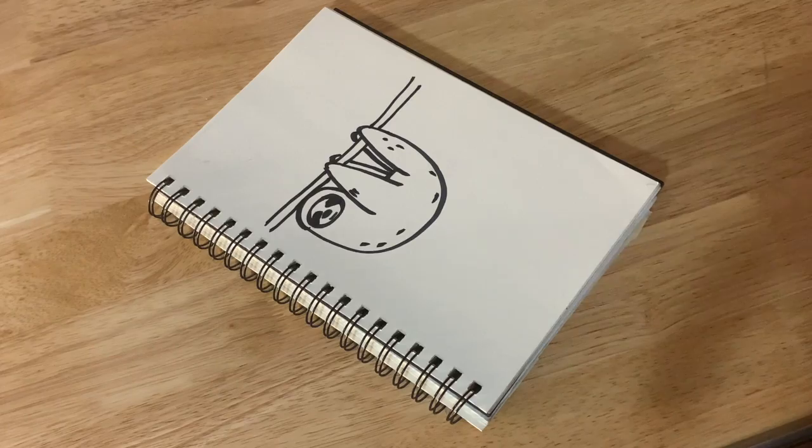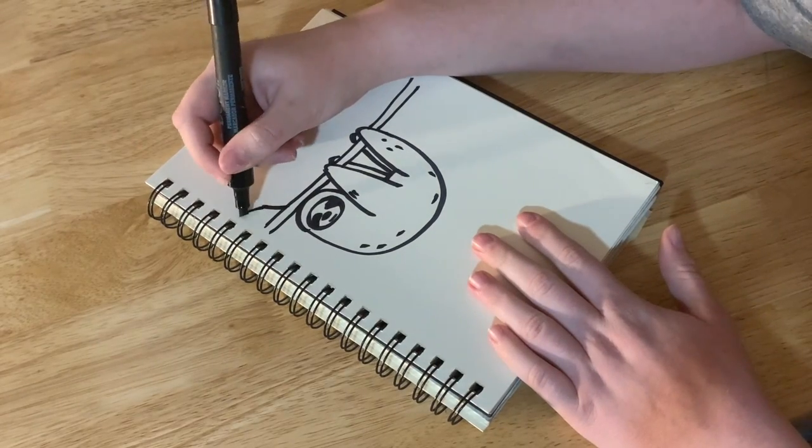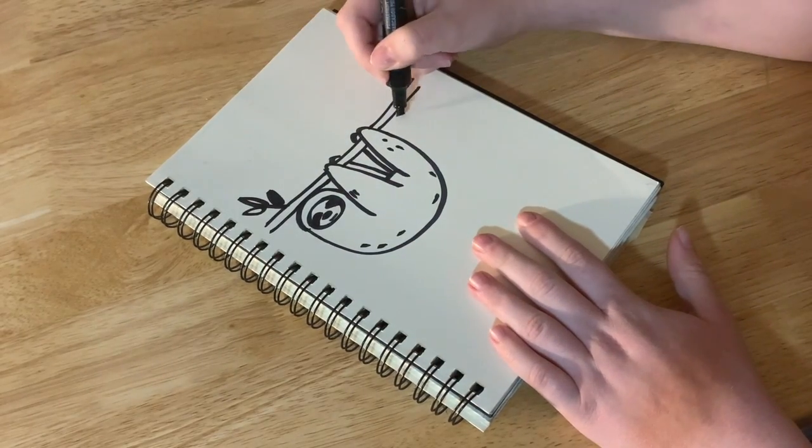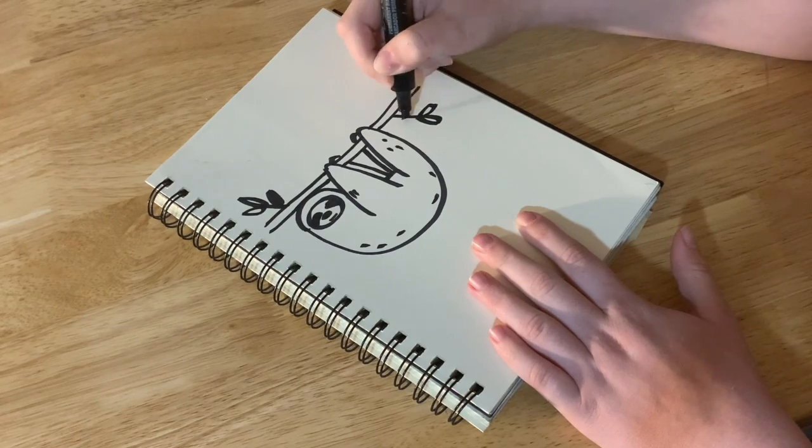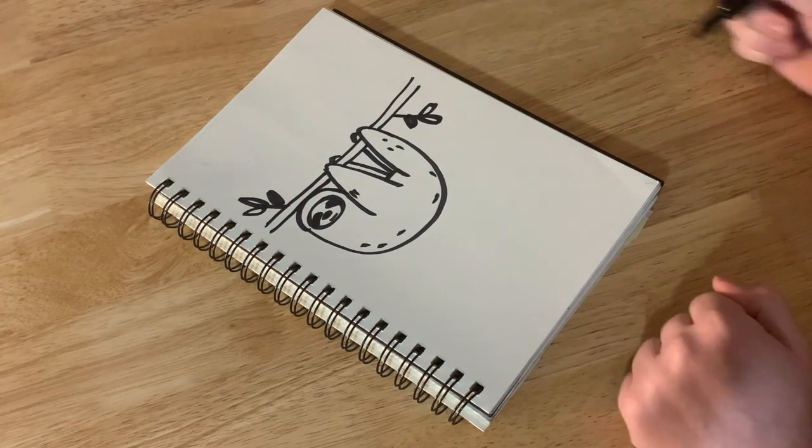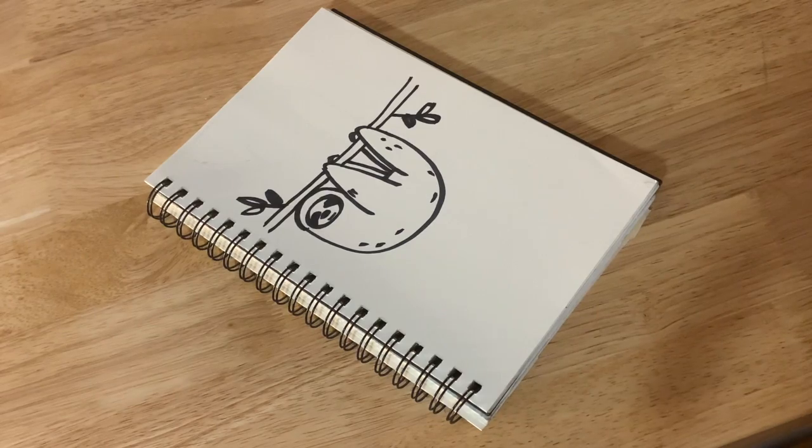And there you have it. There's a little simple sloth. Actually I'm going to add some leaves and branches to our little branch right here. And there you go. There's a sloth.